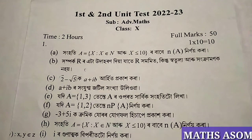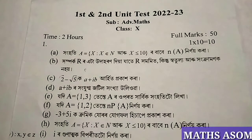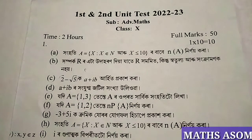Question number 1: 1 into 10 equals 10. Part A: Let A = {x : x belongs to N, x less than or equal to 10}. Answer: 9, 2, N of 10 nine.